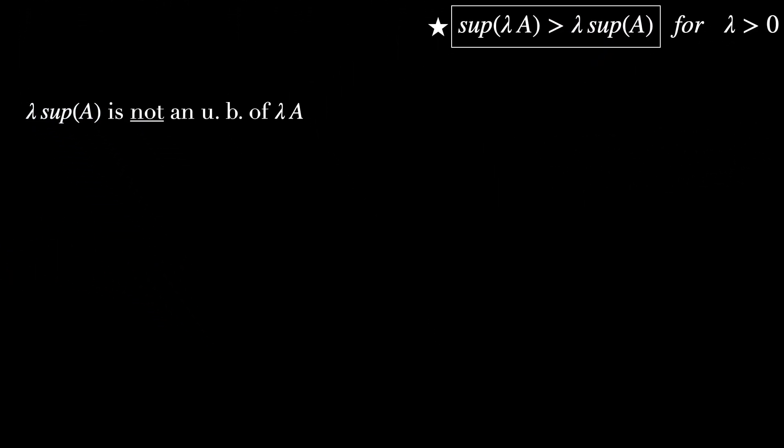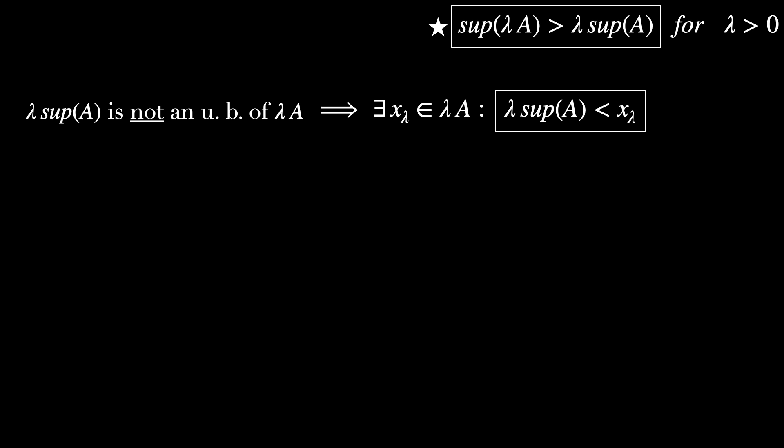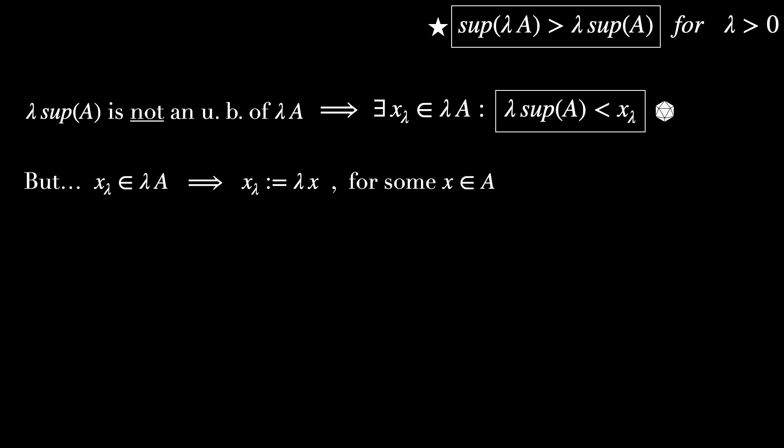In mathematical terms, there exists an element we denote as x_lambda in the set lambda A, such that lambda supremum of A is less than this element x_lambda. This is guaranteed since lambda supremum of A is not an upper bound of lambda A — we call this the icosahedron inequality. Since x_lambda belongs to lambda A, it must be of the form lambda times x for some x in A.